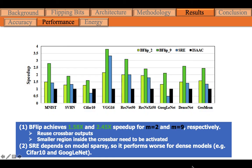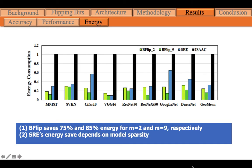B-Flip achieves 1.58× and 2.45× speedup when the crossbar is shared by 2 and 9 bit matrices respectively. This performance gain comes from the reuse of crossbar outputs. In addition, only a small region of the crossbar needs to be activated at the same time, which also leads to faster computation. Since SRE depends on the model's sparsity, it performs worse for dense models. B-Flip saves 75% and 85% energy when the crossbar is shared by 2 and 9 bit matrices respectively, while SRE's energy saving also depends on model sparsity.